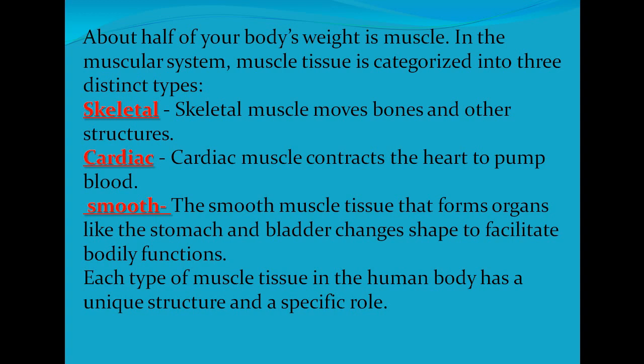About half of your body's weight is in the muscles. In the muscular system, muscle tissues are categorized into three distinct types: skeletal, cardiac, and smooth.